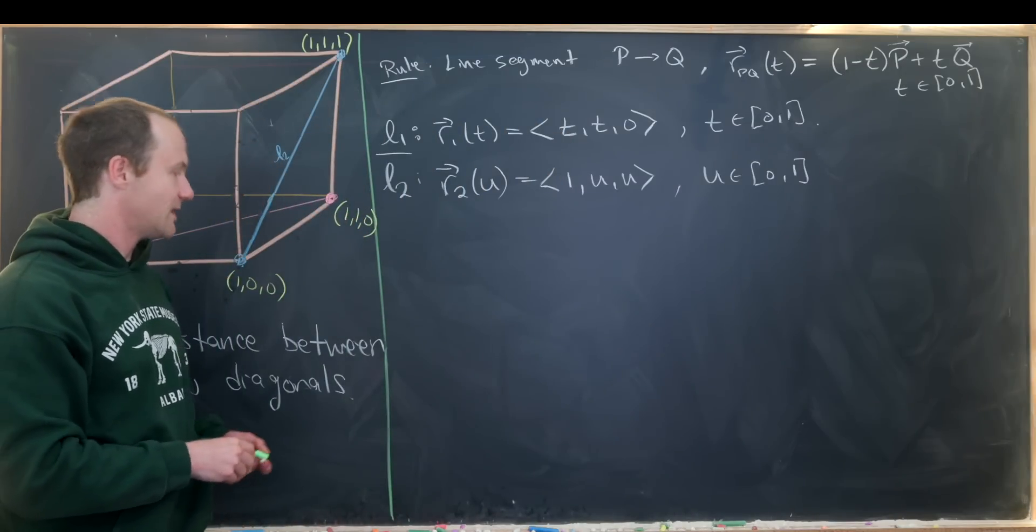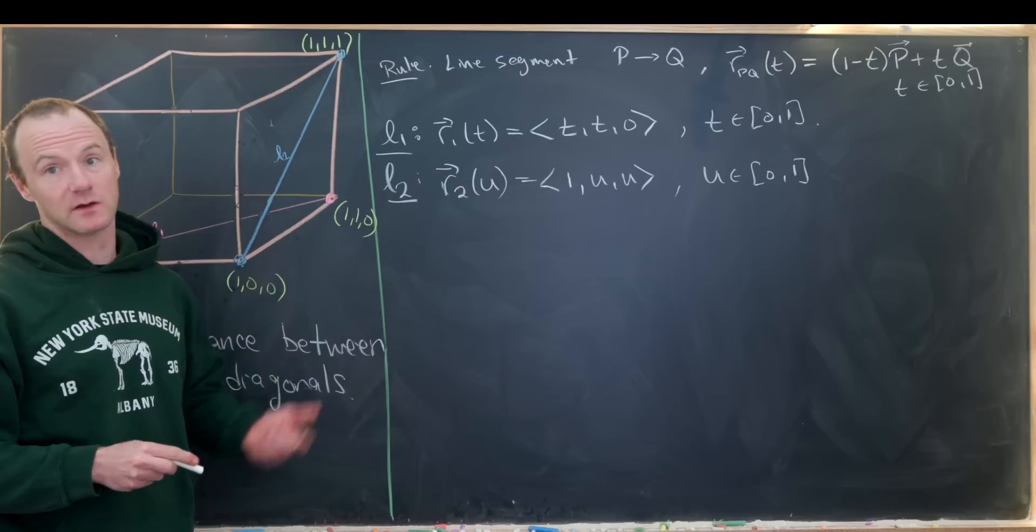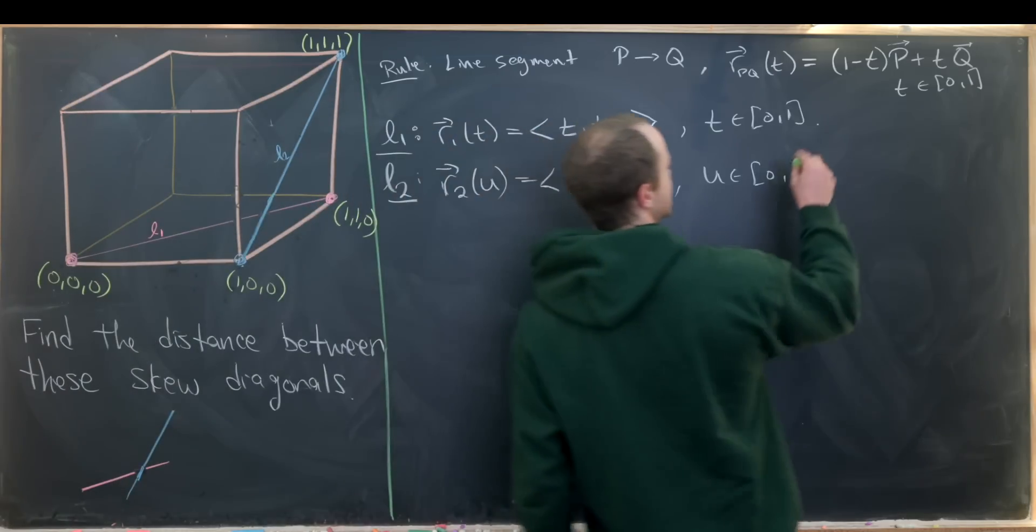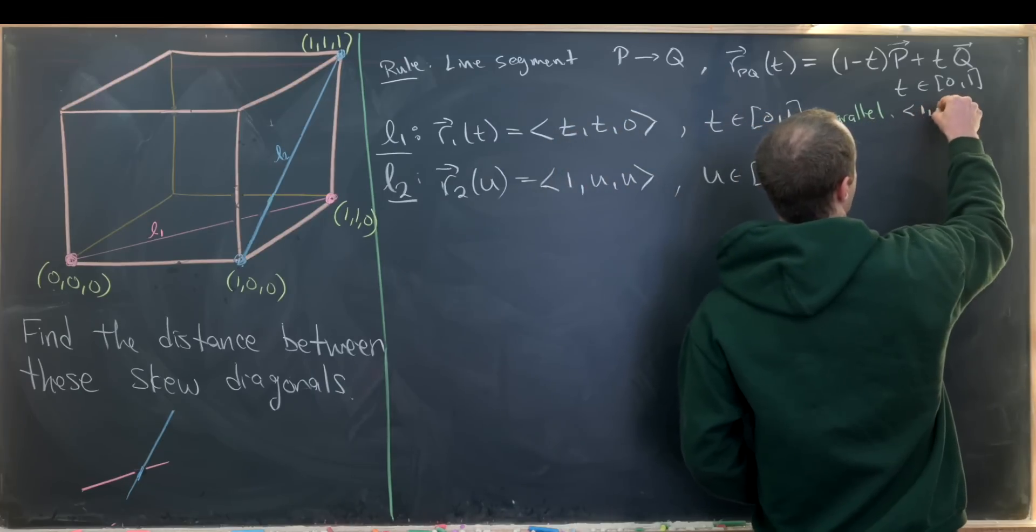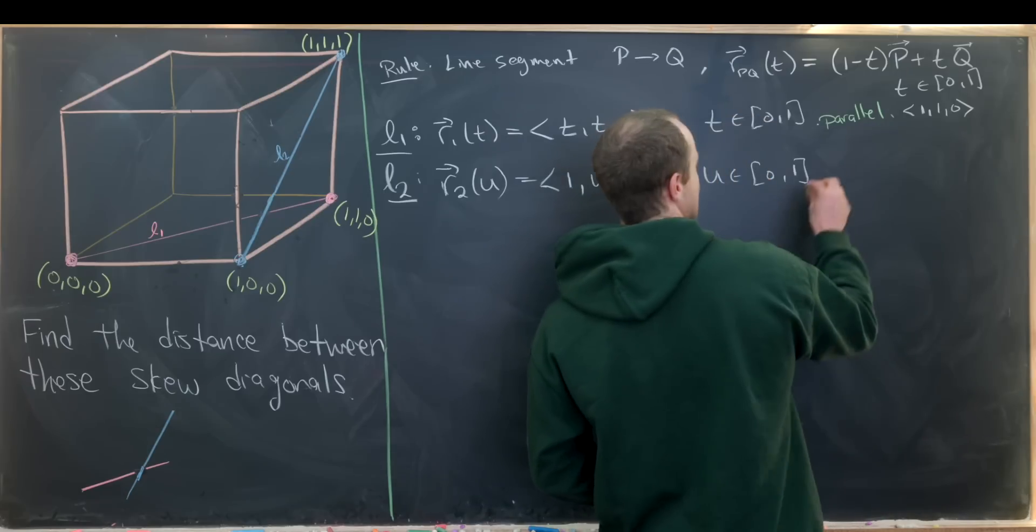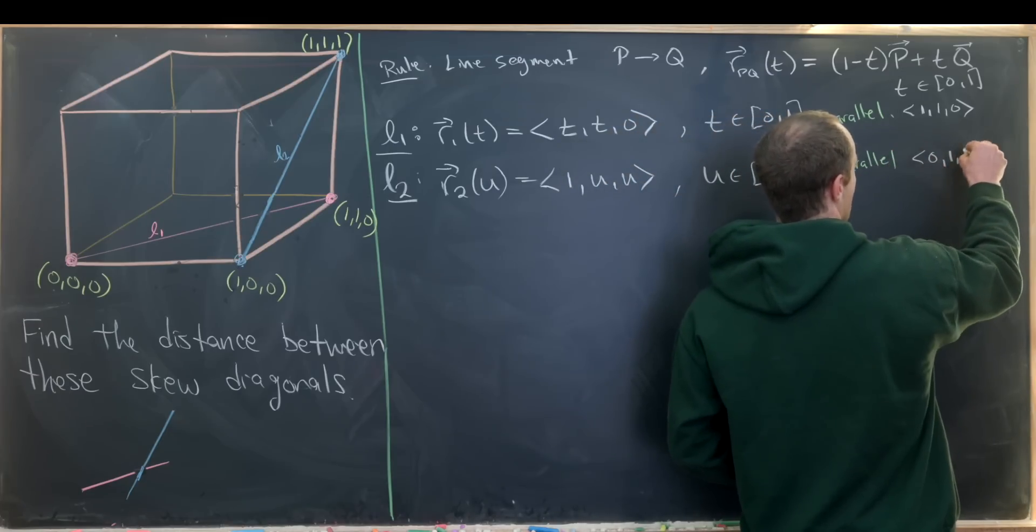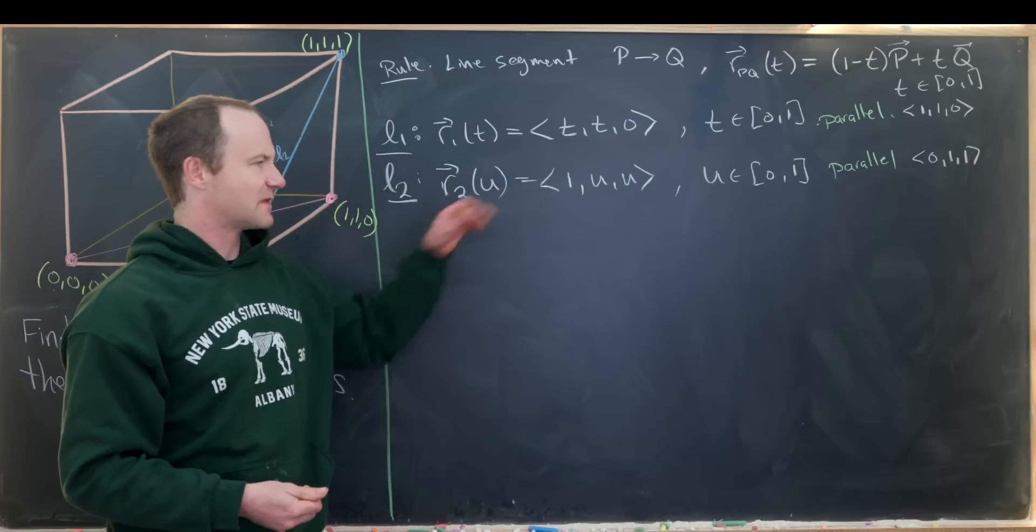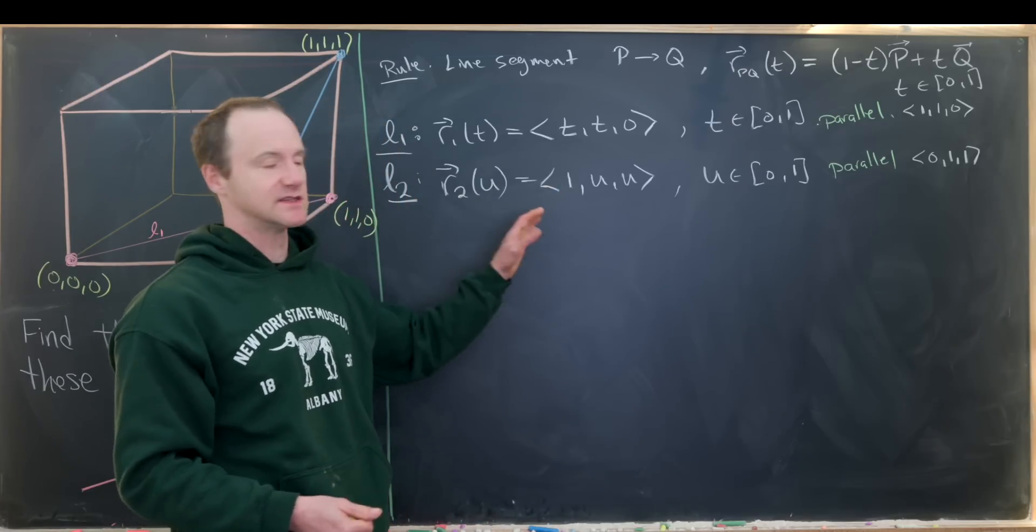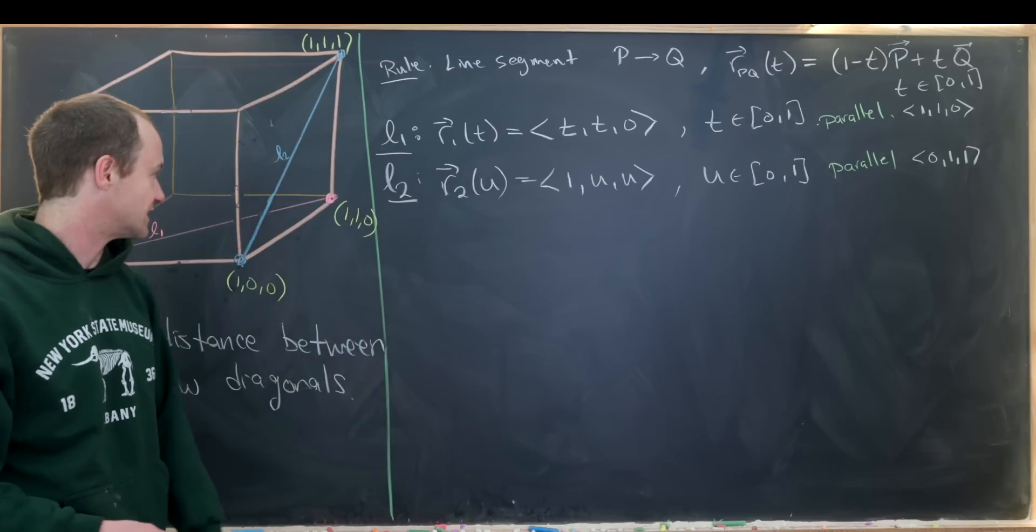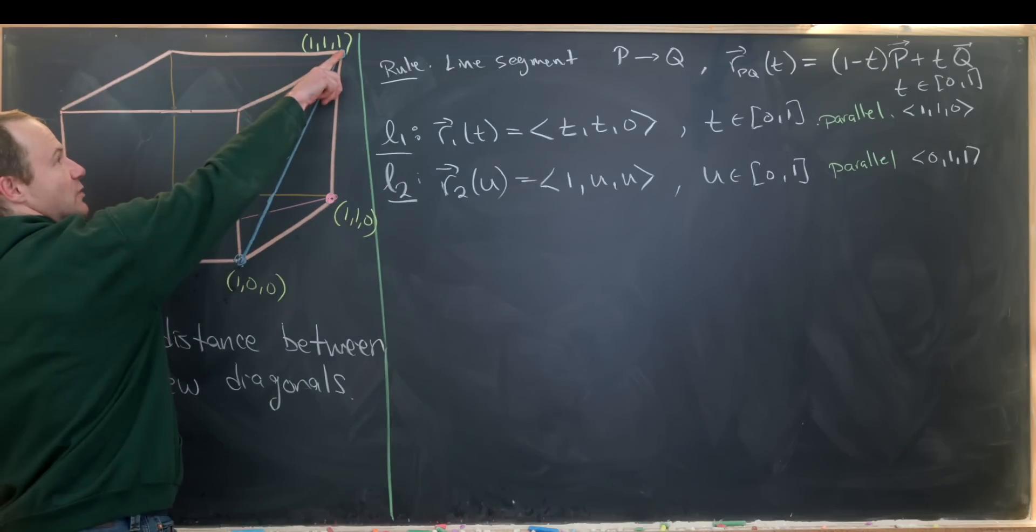Now, before we move on, I'd like to make a couple of observations about these two. The observations I want to make is that they are parallel to certain vectors. So let's notice that this is parallel to the vector that is 1, 1, 0. Whereas this guy right here is parallel to the vector, which is 0, 1, 1. And that's because you can think about these line segments as having kind of a starting point and then a direction. The starting point is given by the constants. And then the direction is given by the stuff that's attached to the vectors. So that's pretty easy to see if we start at this point right here. What's changing from this point to this point is the 1, 1 coordinate in the second two entries.